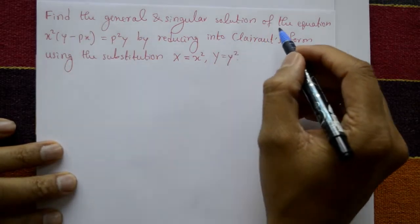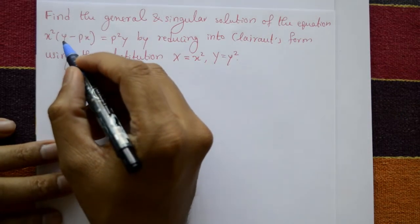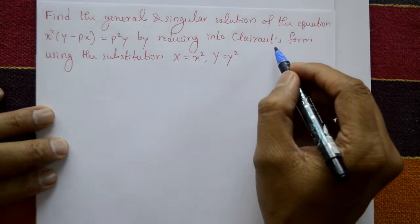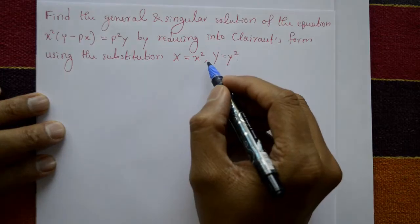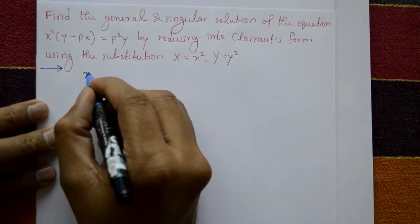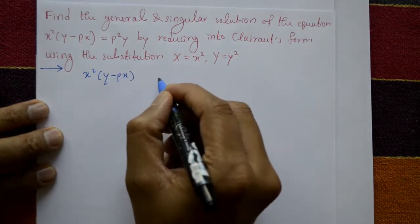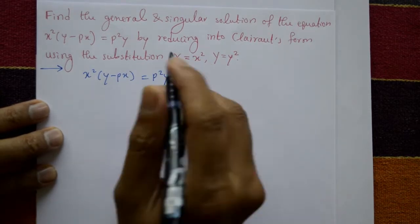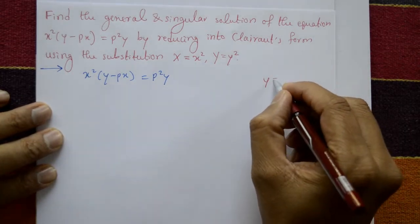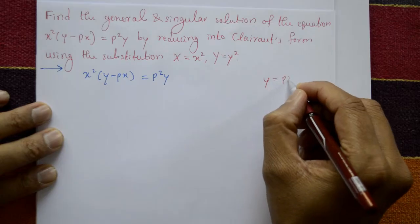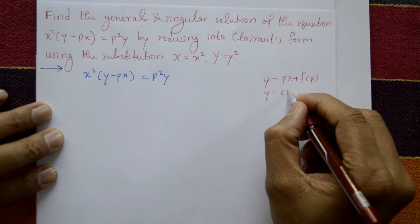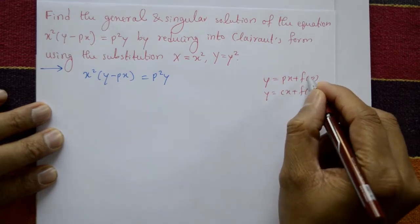Find the general and singular solution of the equation x squared into y minus px equals p squared y, by reducing into Clairaut's form using substitution X equals x squared, Y equals y squared. We reduce the equation into the general Clairaut form: y equals px plus f(p), then put p equal to c, giving y equals cx plus f(c) as the general solution.